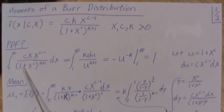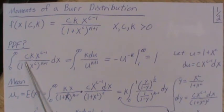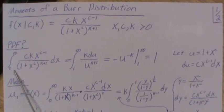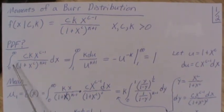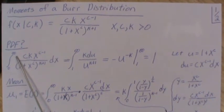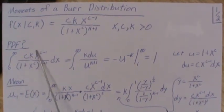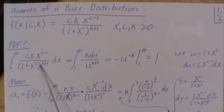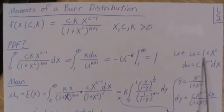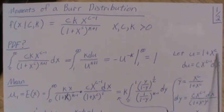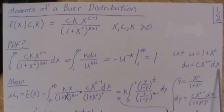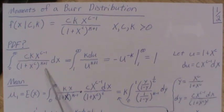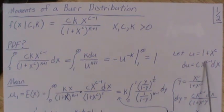So first let's prove that it is a density or a PDF. We integrate the density over its domain 0 to infinity. So we're going to use, we're going to let U equal 1 plus X raised to the C. DU is this, DX. We'll plug in here and we get U.